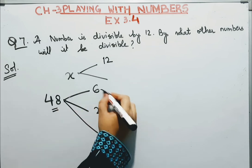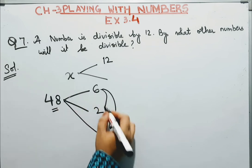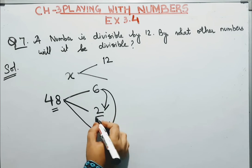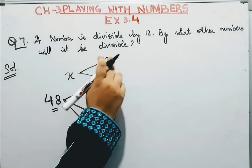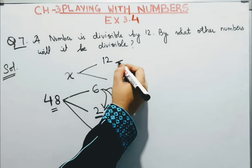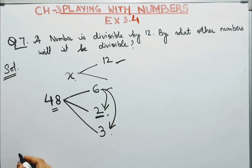Why? Because 2 and 3, they are the factors of 6. Similarly, all the numbers that are factors of 12, this number will also be divisible by them.